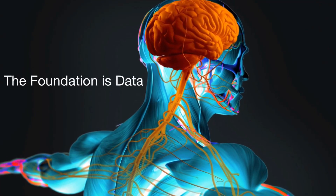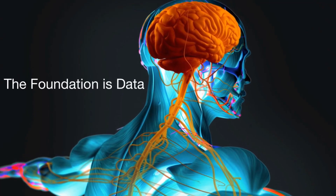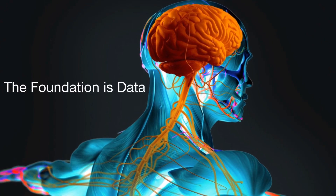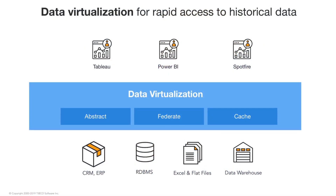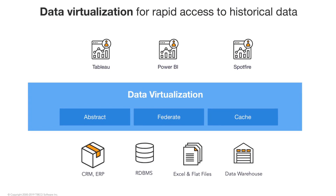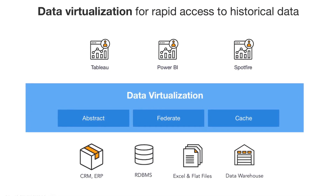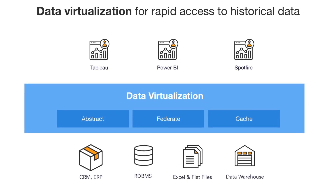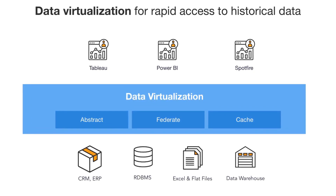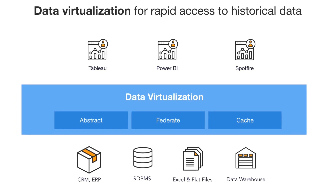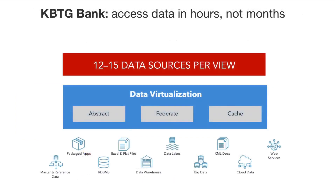Two other innovations make this nervous system work. The foundation of all real-time systems is data. The first is data virtualization. As the name implies, it virtualizes access to data for these applications. Instead of duplicating data with ETL or a data lake, you leave the system-of-record data where it is and access it as a single virtual store. For example, KBTGBank in Asia uses it to create their open banking services that combine 12 to 15 different data sources, and they do it in just hours or days as opposed to months.